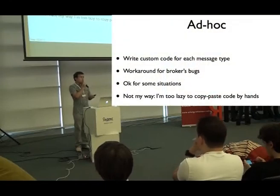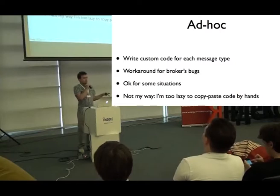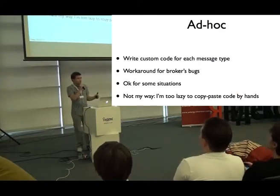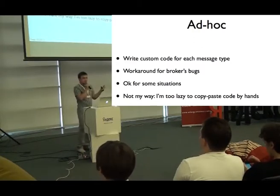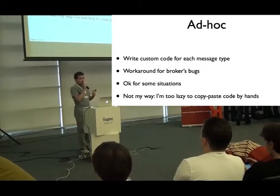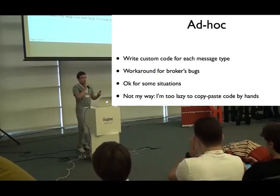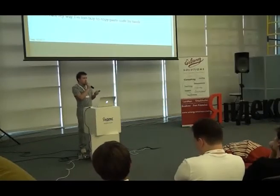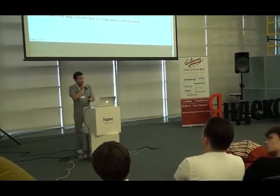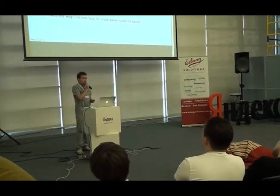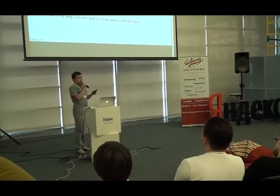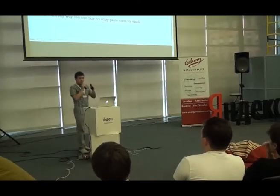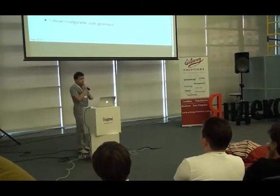The ad hoc way is what many people use: they just write a simple parser of FIX for the subset their broker provides — only three types of FIX messages, ignoring the rest. The problem is that when a broker adds new FIX messages, you have to write more and more ad hoc code. I'm too lazy to repeat this code again and again. Also, many brokers have their own software that implements FIX in their own way, with bugs, and we need to work around them.